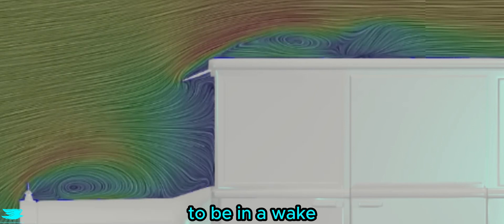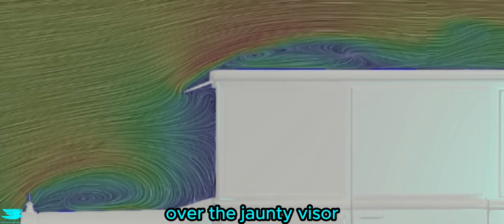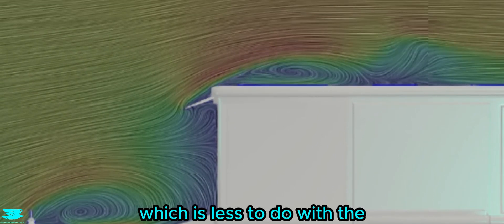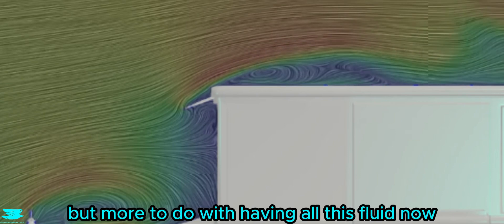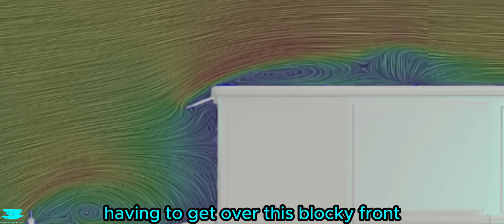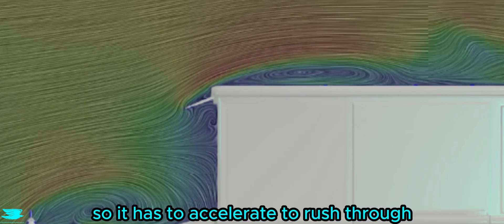Causing much of the roof to be in a wake. And surprisingly, the flow over the jaunty visor actually accelerates a little, which is less to do with the car being streamlined, but more to do with having all this fluid now having to get over this blocky front, so it has to accelerate to rush through.